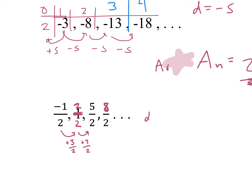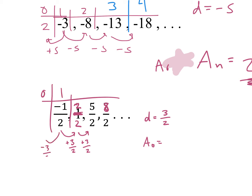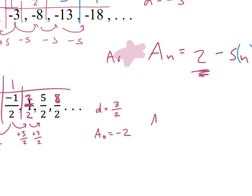So our d is 3 halves. Next, we want to find the zero term, a_sub_0. This is our first term. For the zero term, we would have to subtract 3 halves. So we're subtracting 3 from our numerator — negative 1 minus 3 gives us negative 4 over 2, which would be negative 2.